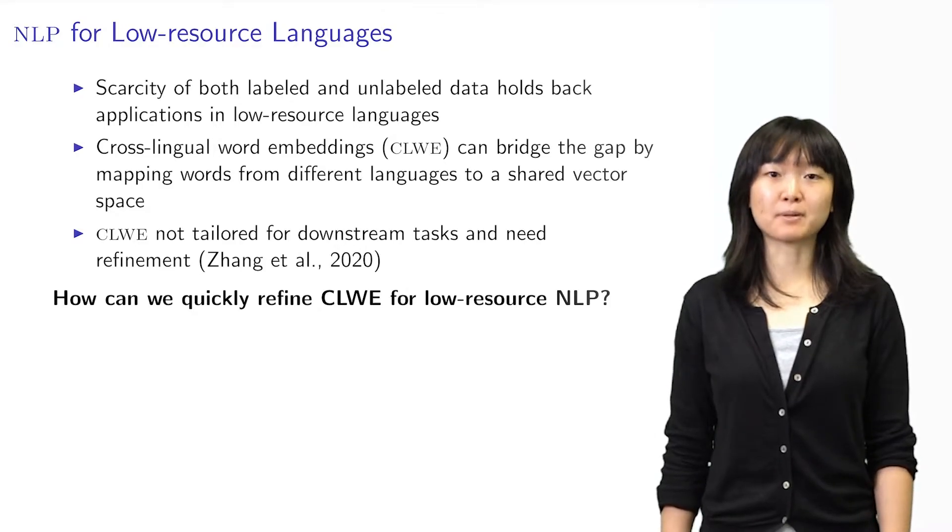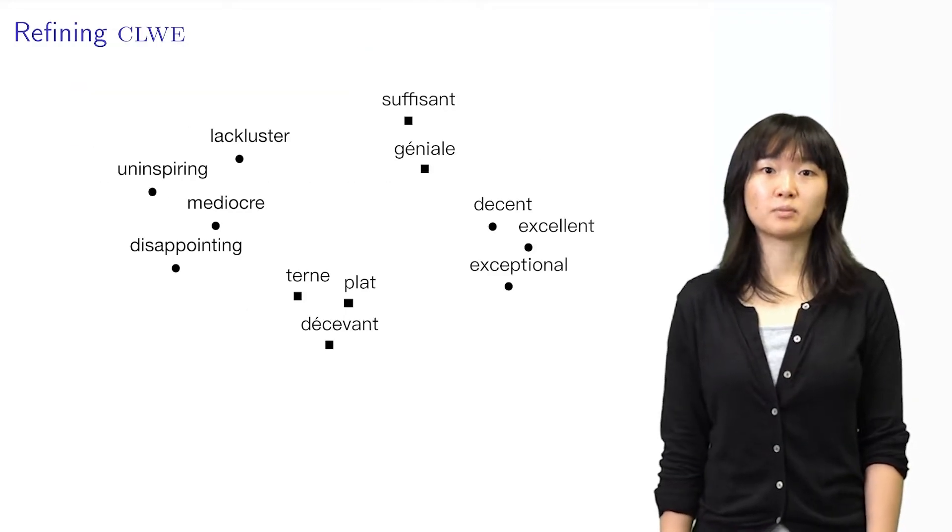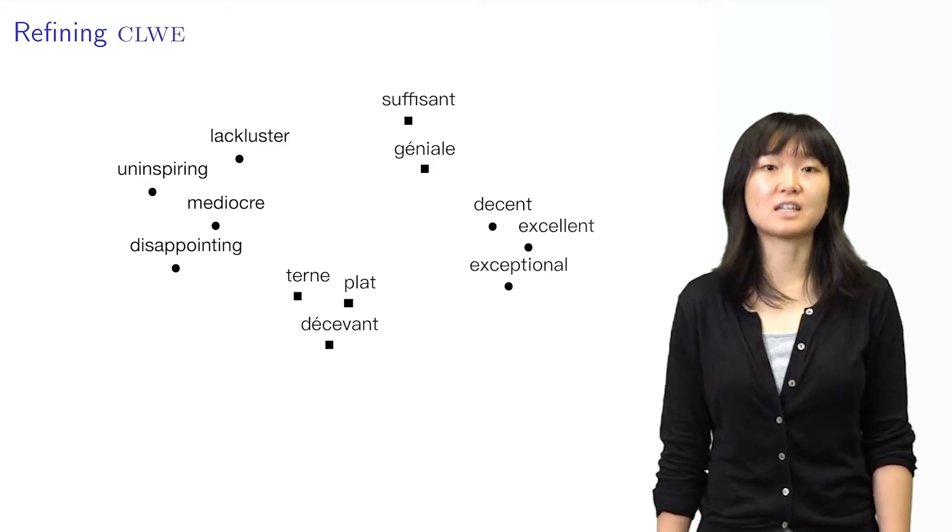In this paper, we try to bring a bilingual speaker into the loop. Here is an example of English-French embeddings for sentiment analysis. Typically, we see that points tend to be closer to others of the same language. We want translations, like disappointing and décevant, to be closer,